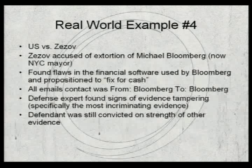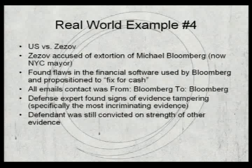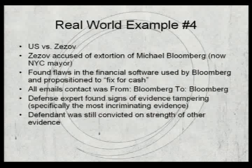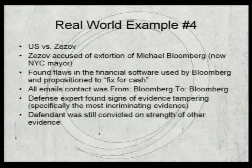The fourth case — the Zezoff/Bloomberg case — involves a Russian national in Kazakhstan or a similar country. Before Michael Bloomberg became mayor of New York, he ran a big firm with financial software. This individual found a flaw: normally with the software there'd be a login, but there's secondary authentication that runs under the covers, and he used soft dice to bypass the first part and only use the second part. He got into their Solaris back-end system and started sending emails from Bloomberg to Bloomberg saying 'I found holes in your stuff.'